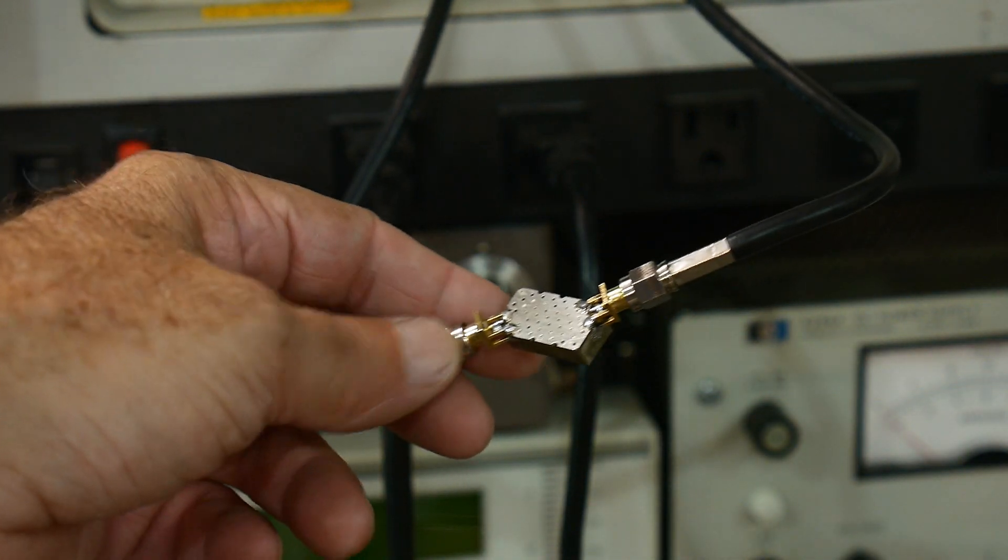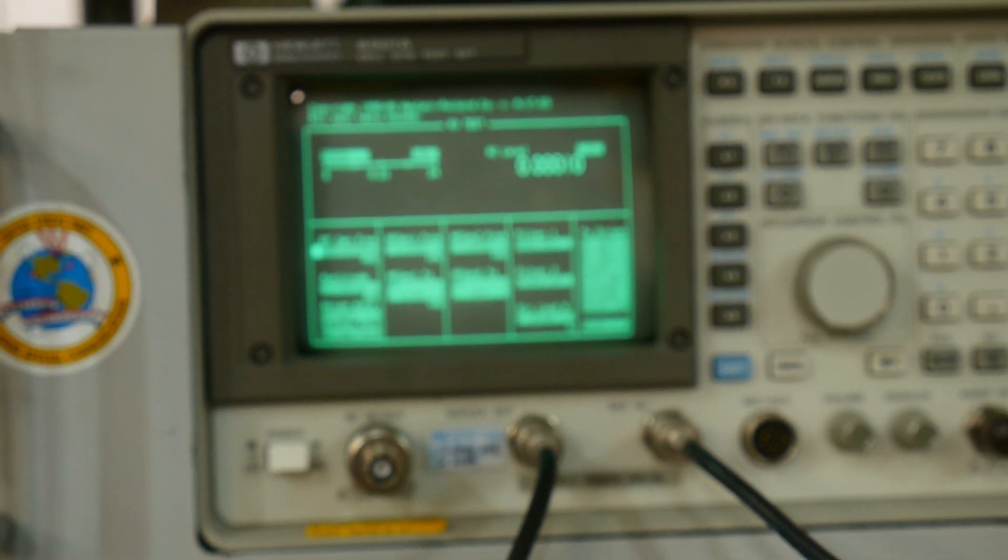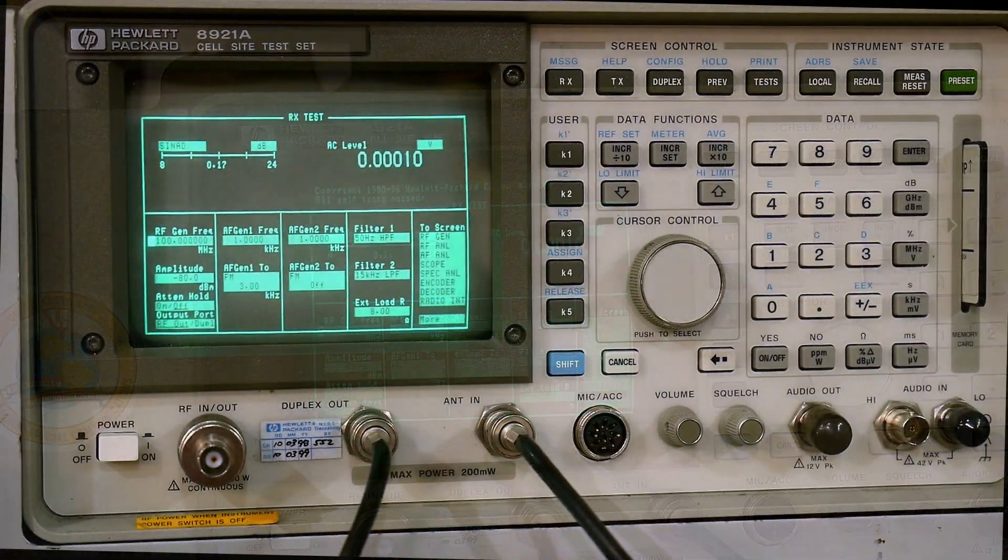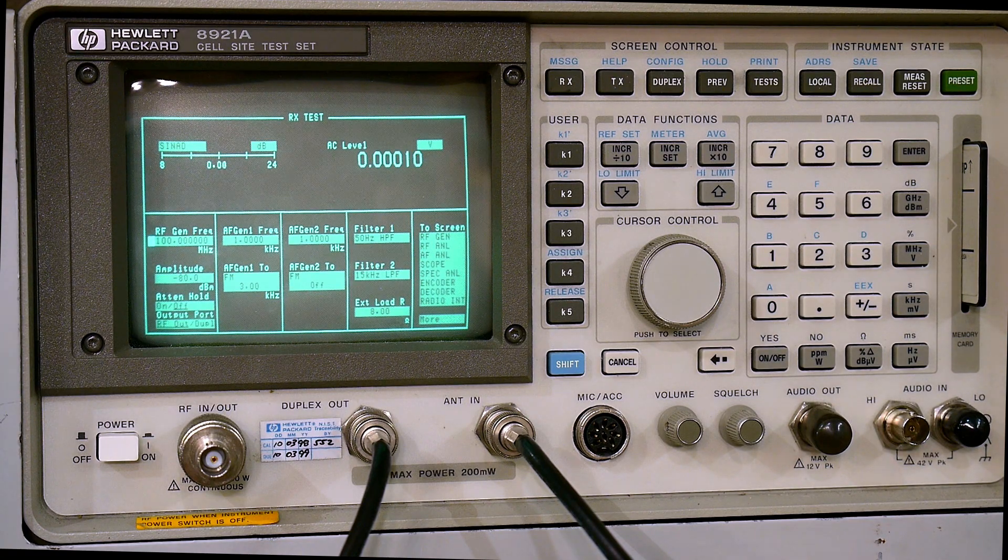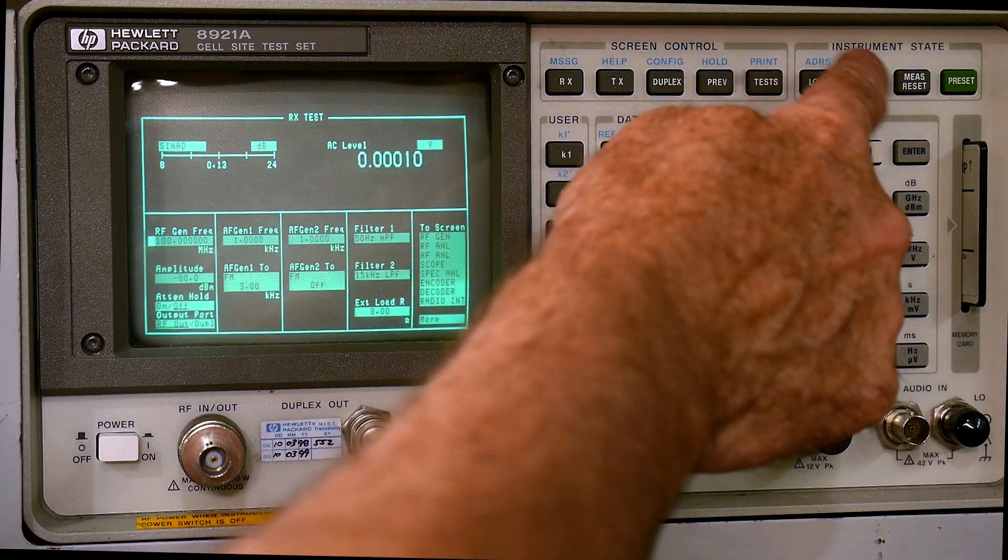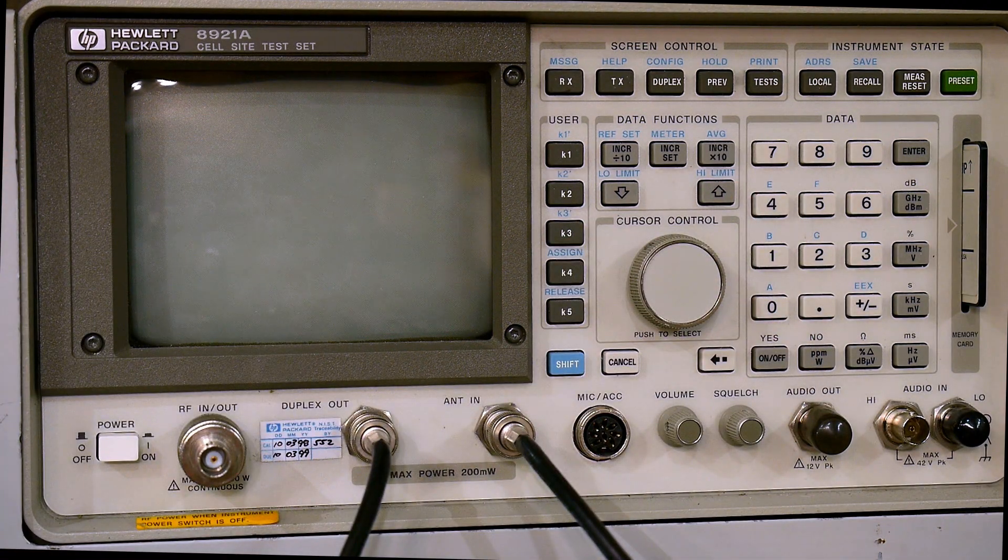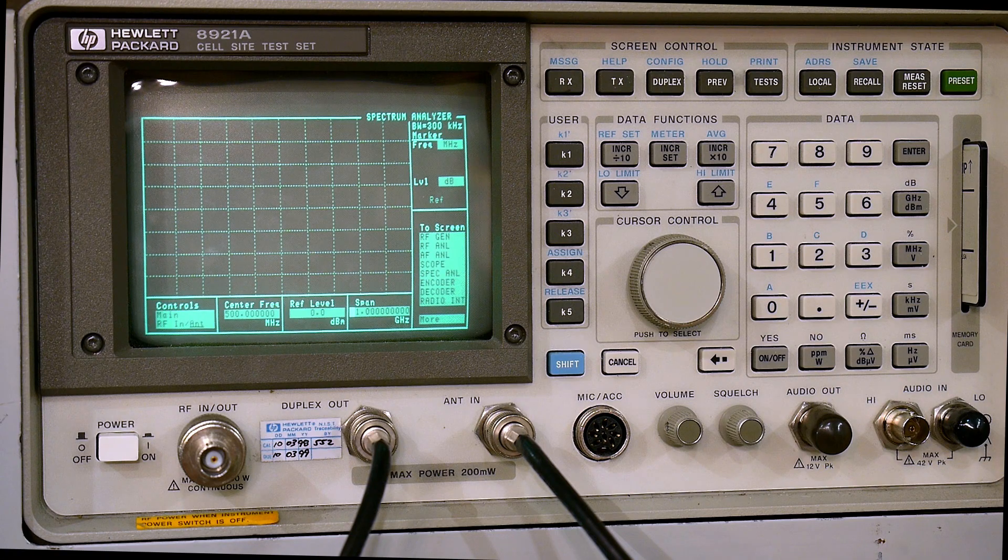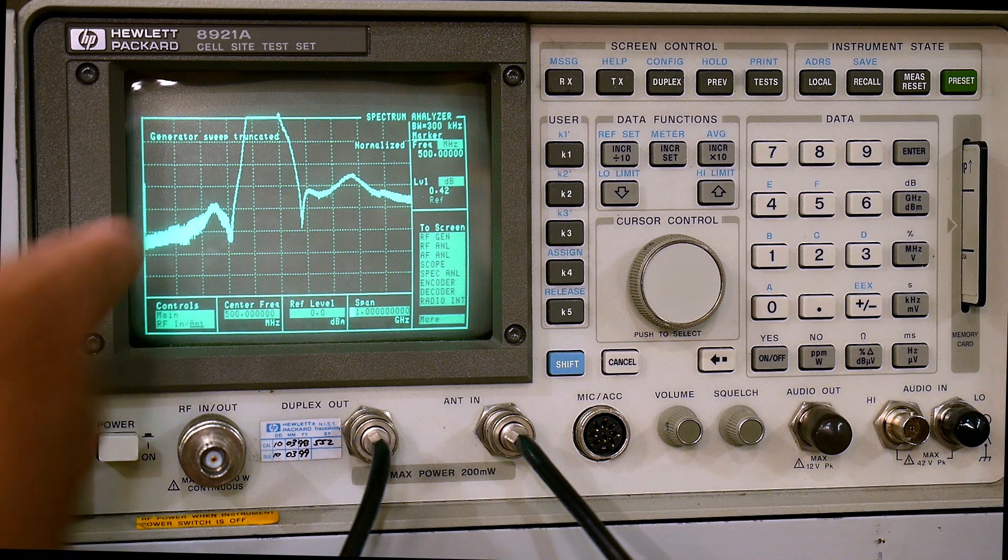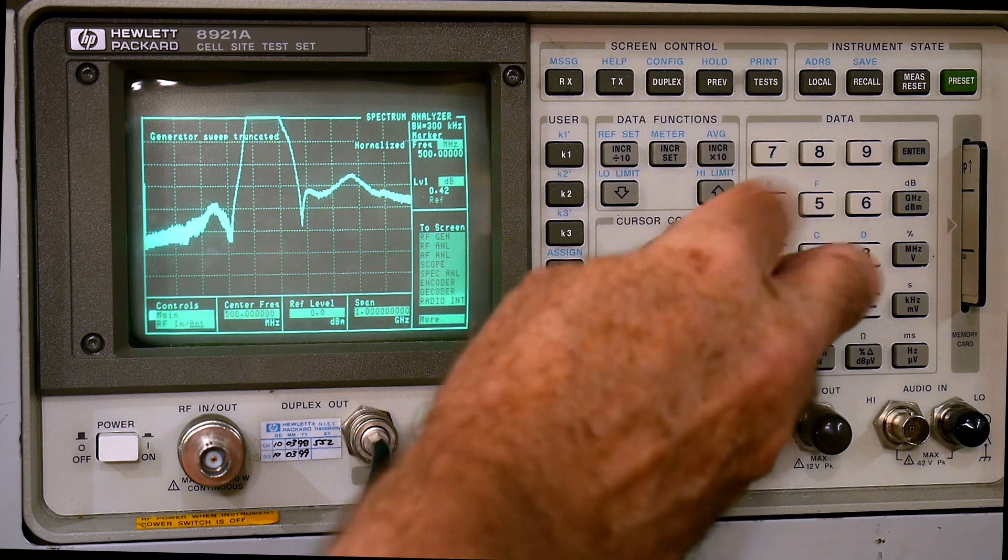All right, here I've added some SMA connectors to it and we can have it hooked up to the analyzer. Let's see what we can see. I have a couple stored programs in here, just so I have an easy way to get to a certain position. I can do recall. I have something called low-pass filter which is a good starting point. There we go, it looks kind of like a filter now. It gets us into the ballpark.